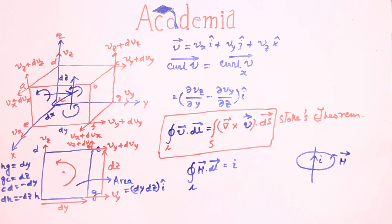j is the current density. So i can be written as surface integration of j dot ds. Now by Stokes theorem, this closed line integration of h dot dl can be written as surface integration of curl of h dot ds. Now by comparing these two we get curl of h equals to j.